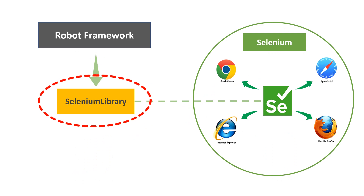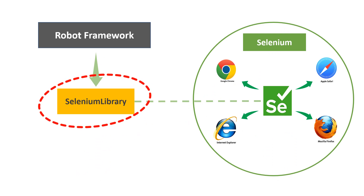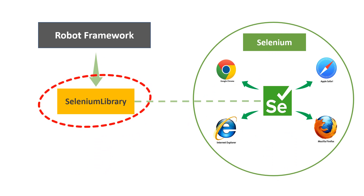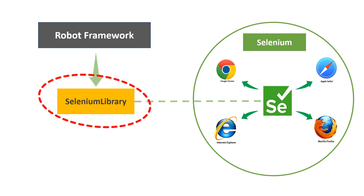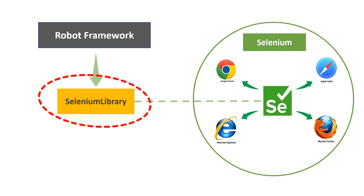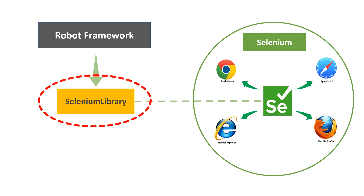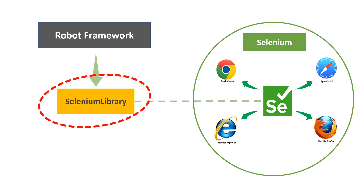Now that is Selenium, but here we are talking about the Selenium library. Since we are doing a course on Robot Framework, and Robot Framework is written in Python whereas Selenium is written in Java, we need a binding layer — that is the Selenium library.